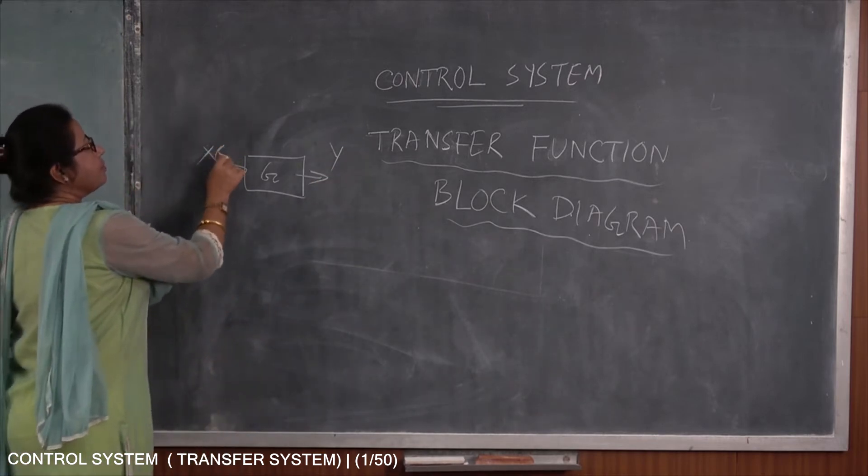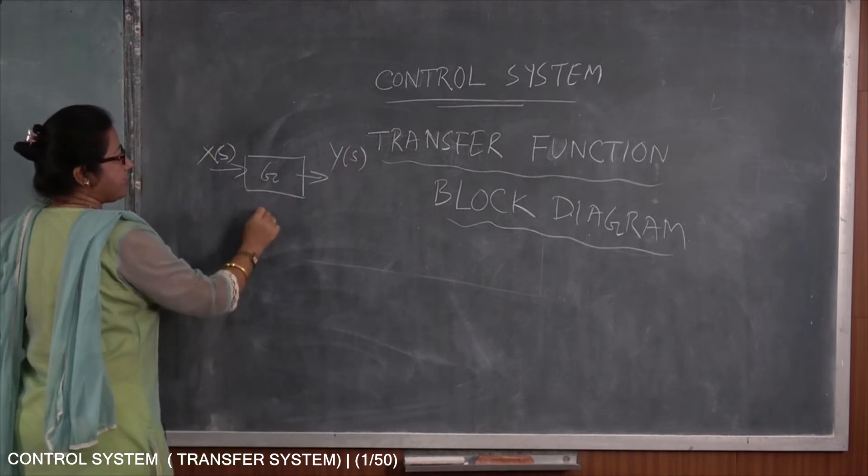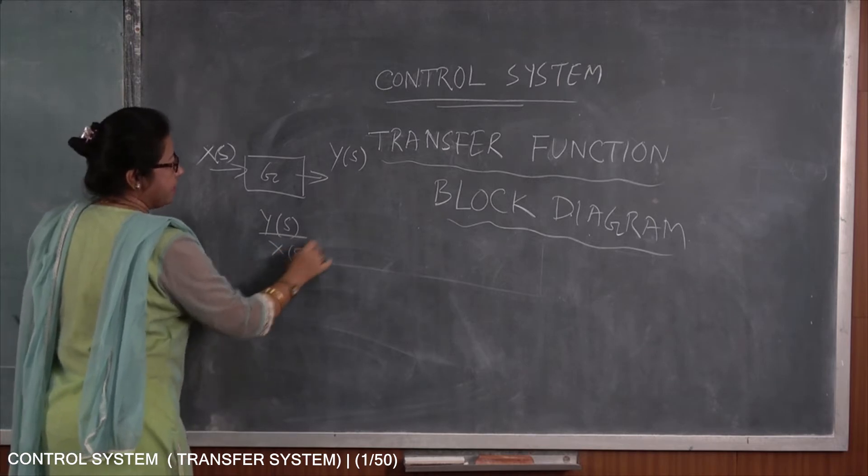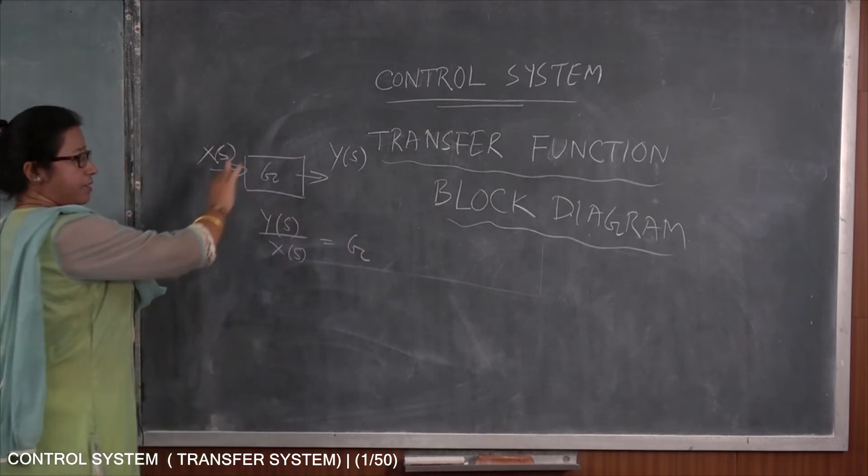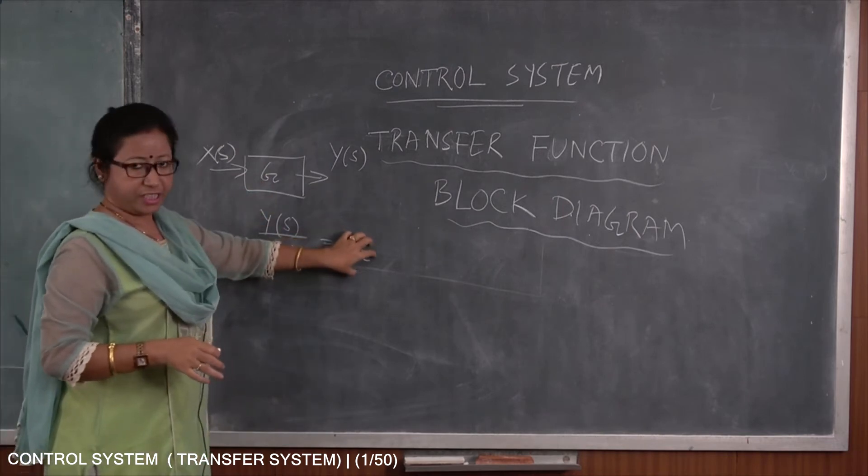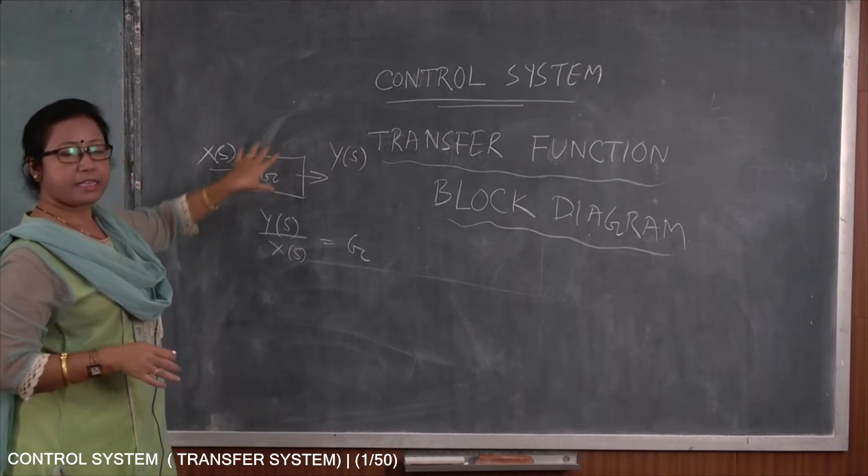So what is the transfer function of this? I can say y(s) by x(s) is equal to whatever gain is there, that is y(s) by x(s) is g. So a block means a block consists of a system, right?